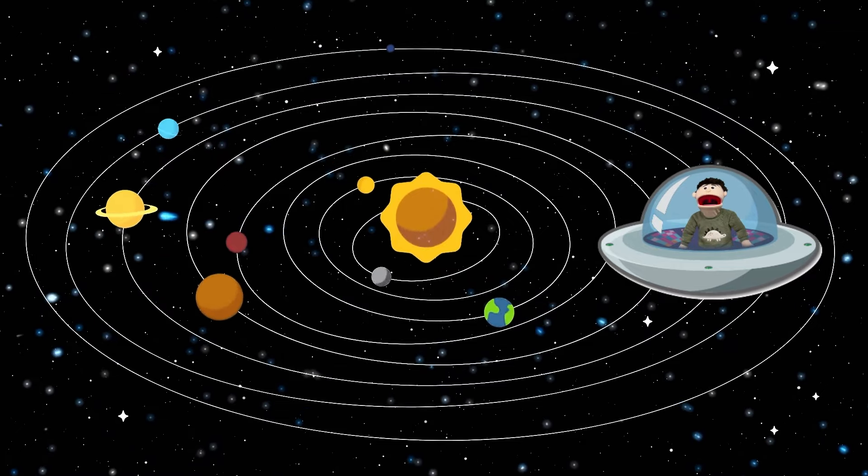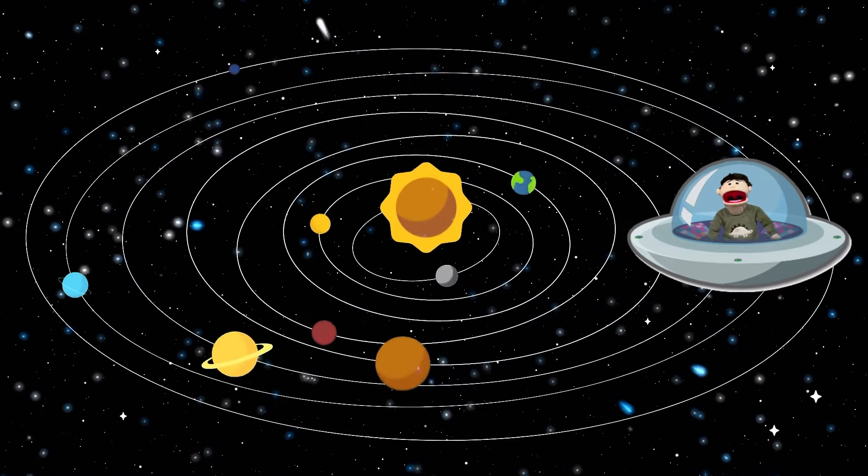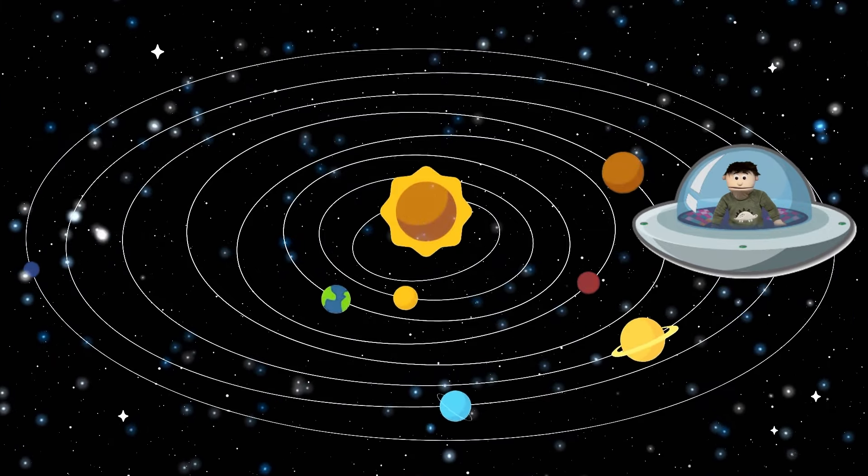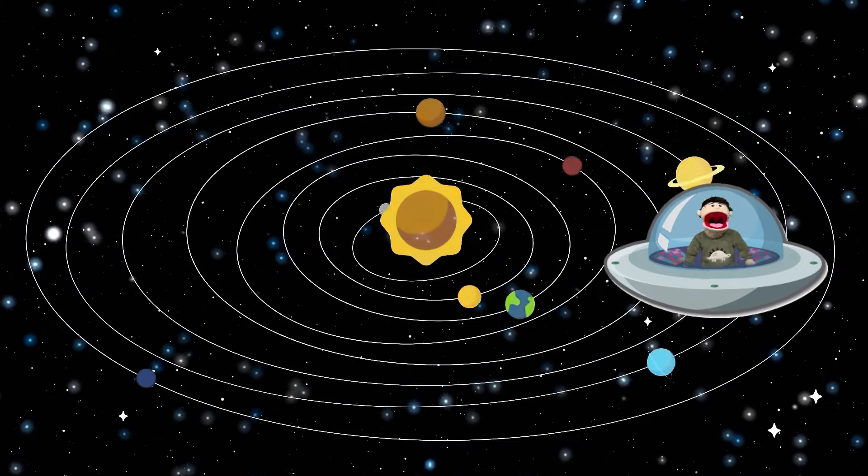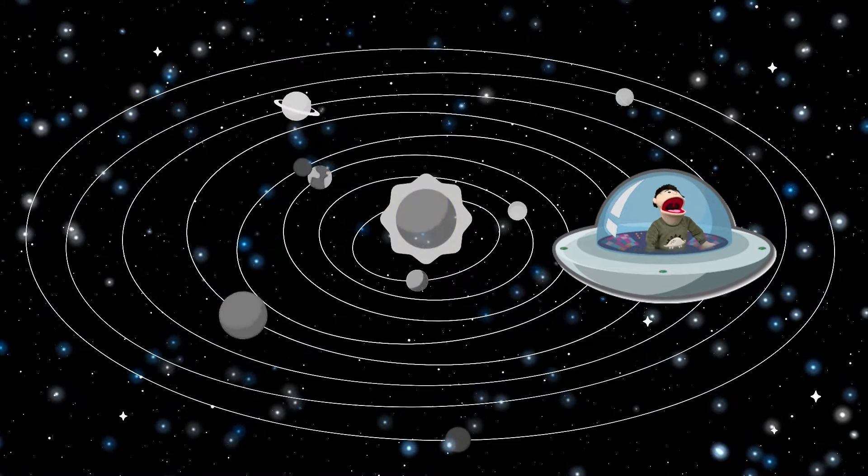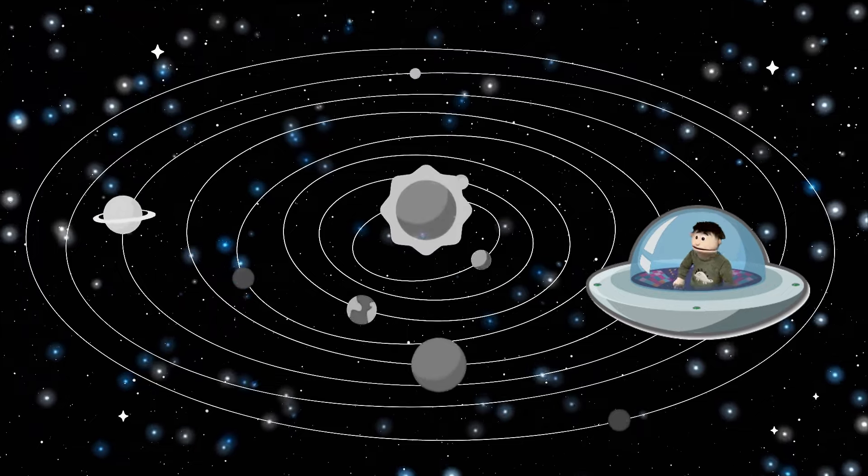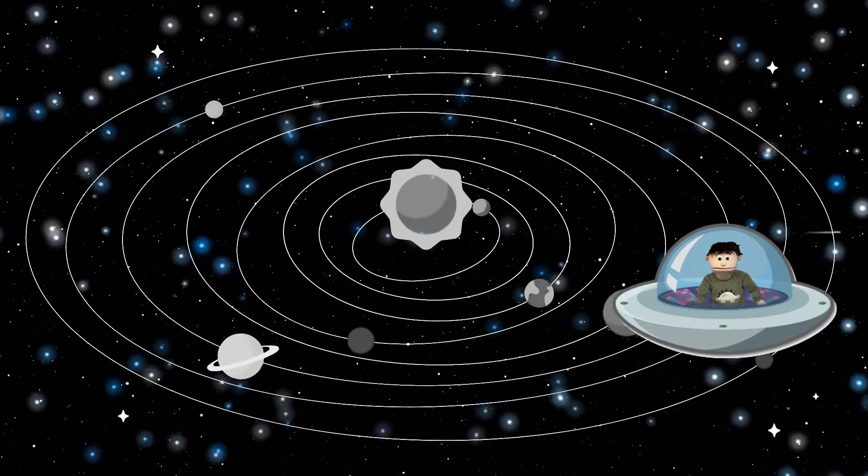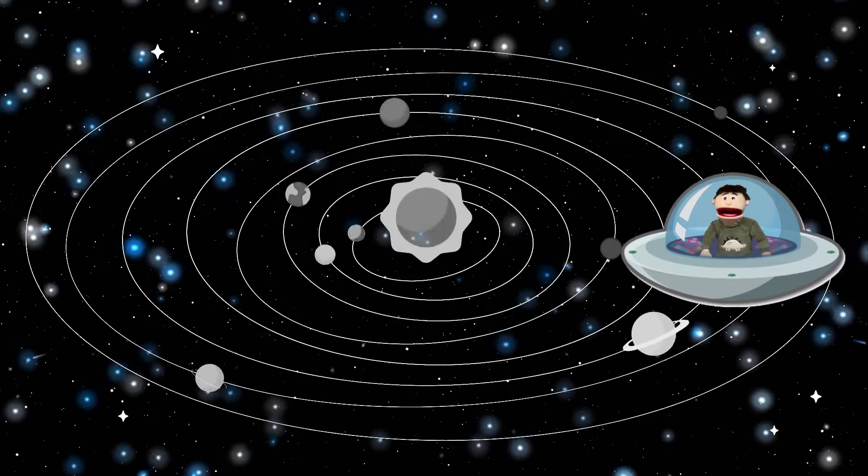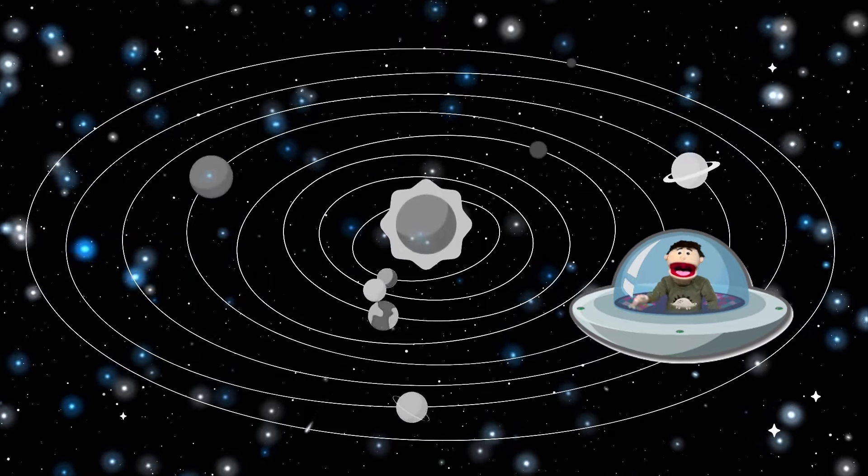Whoa! Look at all these planets in our solar system. All of these planets rotate and go all the way around the sun. Oh no! What just happened? Look at all the colors of the planets. They disappeared. Let's figure out what the colors of the planets are and get them back to normal again.